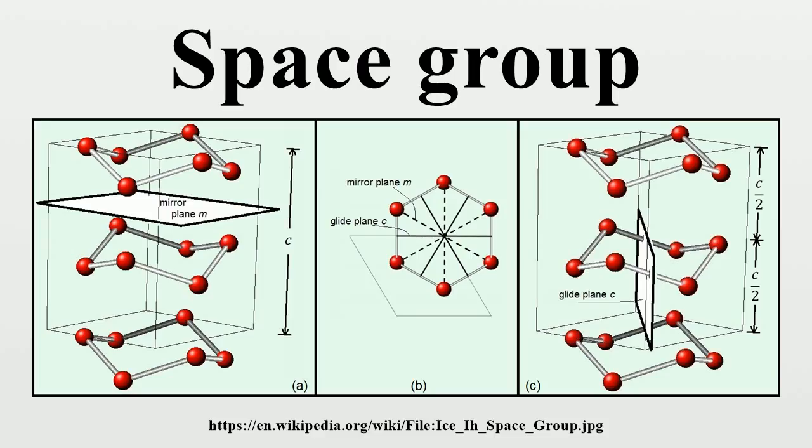Elements fixing a point: The elements of the space group fixing a point of space are rotations, reflections, the identity element, and improper rotations.